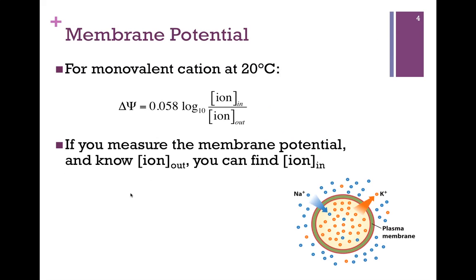If we assume a monovalent cation at a temperature of 20 degrees centigrade, then our expression simplifies. Now our membrane potential is simply a logarithmic ratio of the concentration of ion inside versus outside. What drives the membrane potential and creates that difference in voltage across the membrane is simply our established concentration gradient. This equation also allows us to determine the concentration of ions inside the cell if we measure the membrane potential and know the concentration outside. In other words, if we measure delta psi and know the concentration outside the cell, we can calculate the concentration of ions inside.